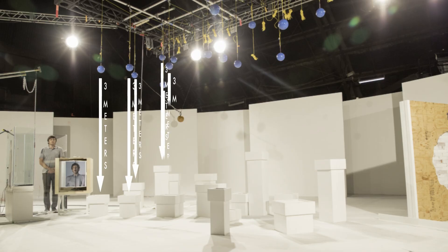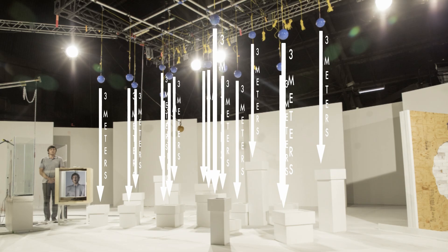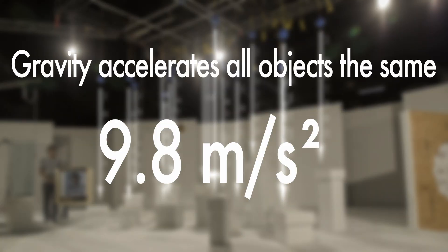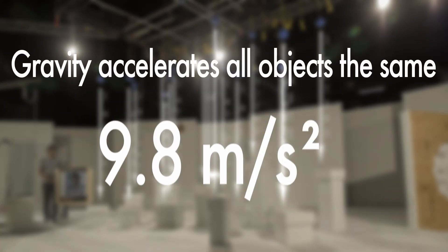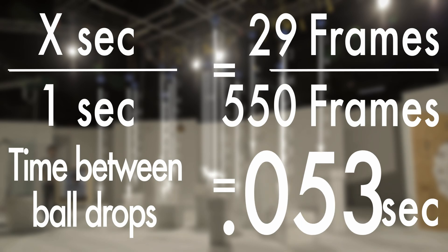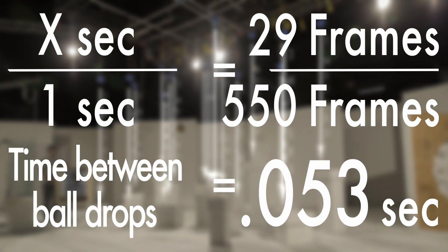In real time we need these balls to land 0.053 seconds apart. That's about a 20th of a second. Each of the balls was rigged at the same height above its platform, so that means each one will take the same amount of time to get to its impact. So now we know how quickly in succession we have to drop each one for them to land one beat apart in slow motion.